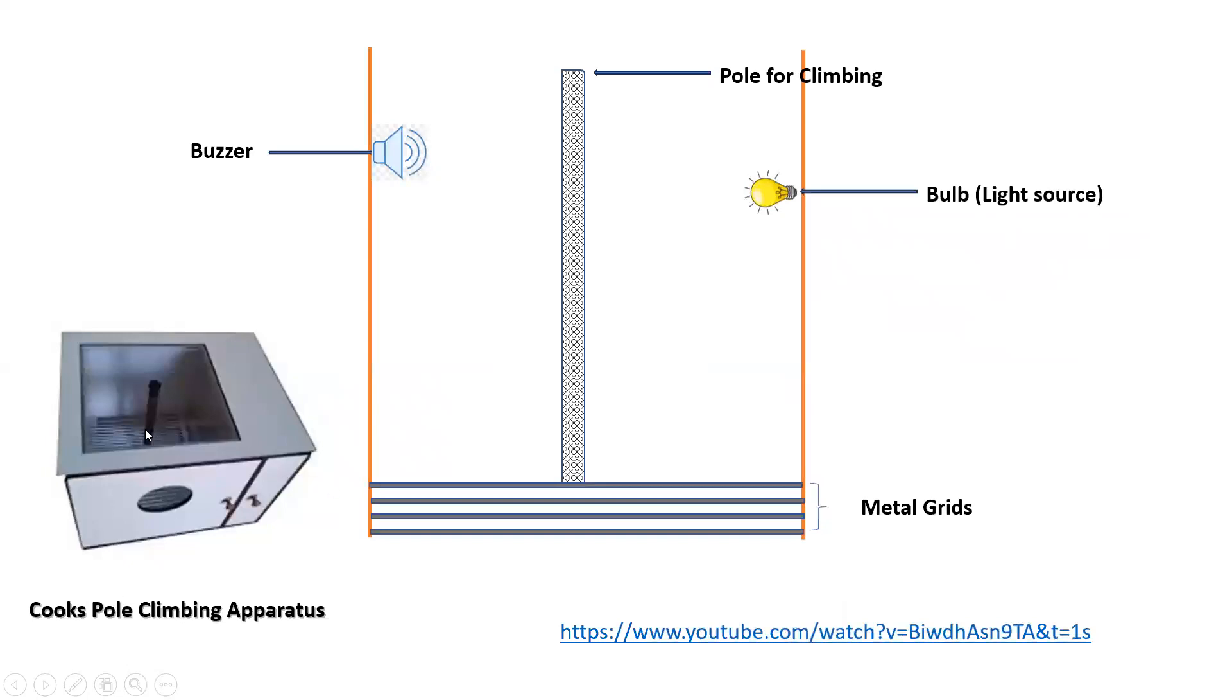As it is shown, it is a pole climbing apparatus and the detailed description of this apparatus is given in this YouTube video. A separate video is uploaded on Cook's Pole Climbing Apparatus, the link is provided here. So in short, as you observed, it is a square chamber containing the metal grid from which the electric current has to be provided. There is a bulb light source and a buzzer and there is one pole on which the animal can climb, and that's why it is called the pole climbing apparatus.